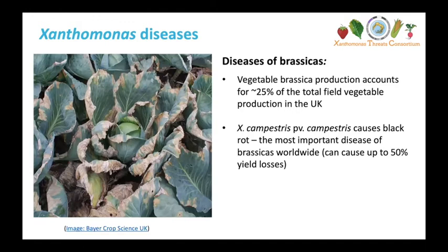This is a cabbage on the left showing symptoms of black rot — it's pretty grotty looking. It has these typical V-shaped lesions that start from the periphery of the leaf and grow inwards towards the central vein. This will be our model host-pathogen system, but our project will also look at some emerging and potential threats to UK agriculture and ornamental production.